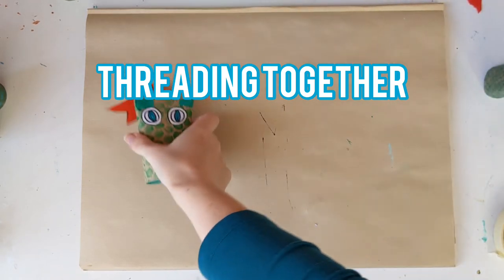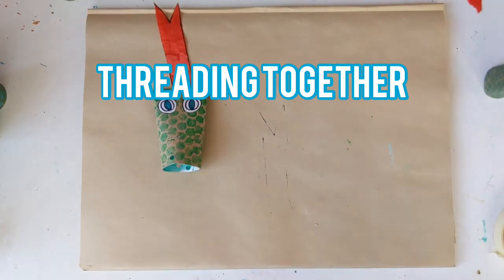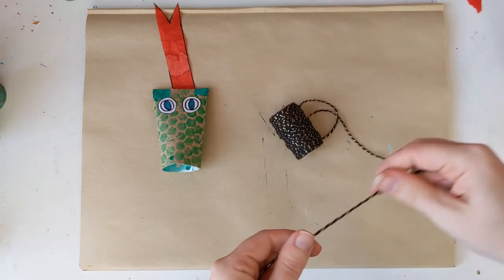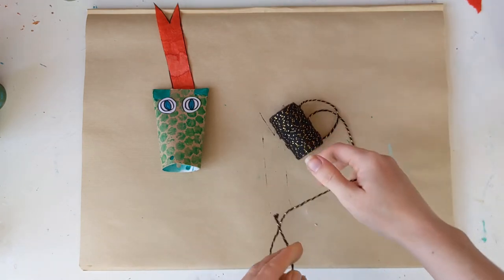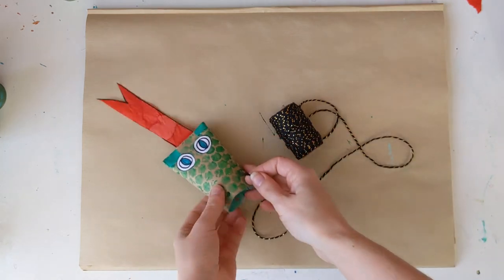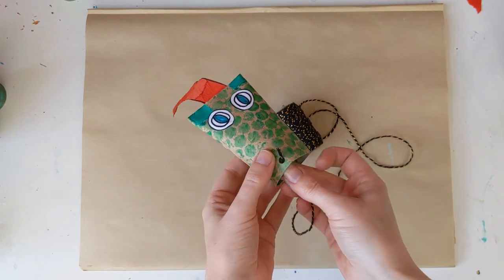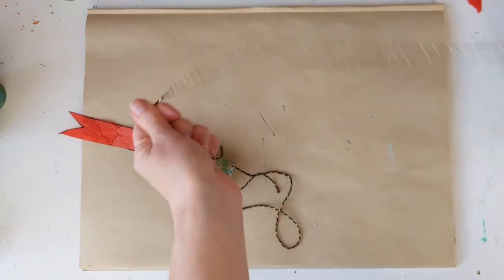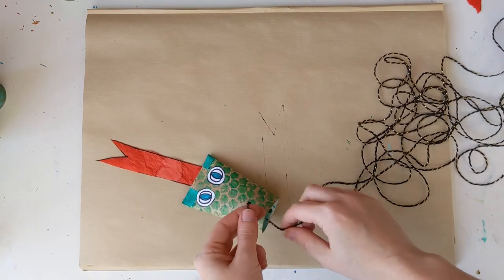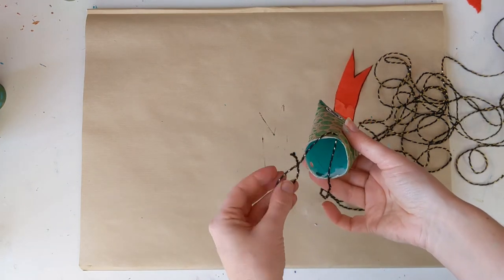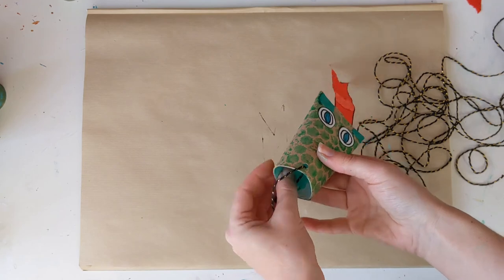We're really close to finishing the snake so now what we need to do is to thread together all of the pieces. So we take the string and pull off a large section of it like this and then we'll thread it through the holes of the head and tie together like this.